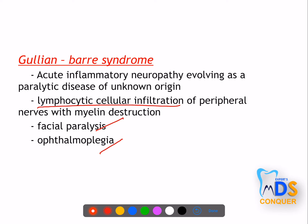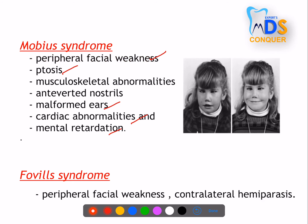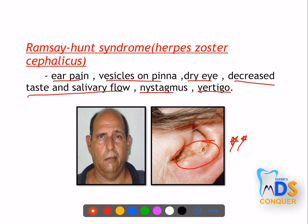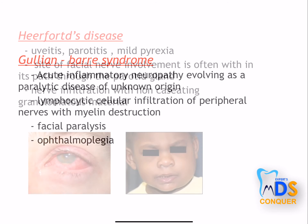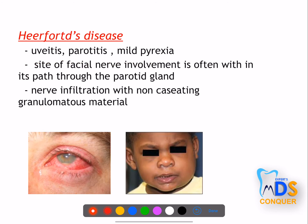Heerfordt's disease is caused by granulomatous infection such as sarcoidosis, showing uveitis, parotitis, mild pyrexia, and facial paralysis — with parotid gland enlargement and inflammation of the uveal tract. So Heerfordt's disease is also an important granulomatous condition associated with facial paralysis.